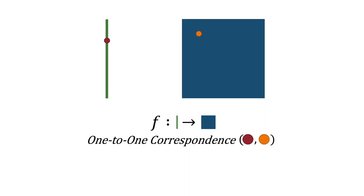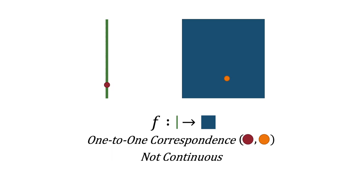The only limitation with Cantor's function is that this process is not continuous. For a function to be continuous means that a little change to the input will lead to just a little change in the output. If Cantor's function were continuous, then a path along the square would mean the corresponding points on the line segment would be smoothly connected — no jumps or breaks allowed. What actually happens is that a smooth path on the square corresponds with a bunch of disconnected points that you jump around to on the line segment.